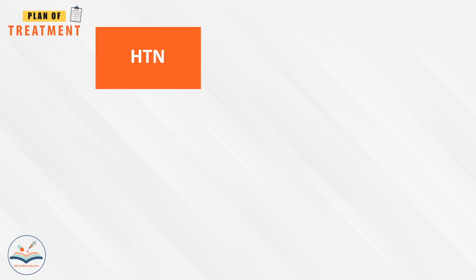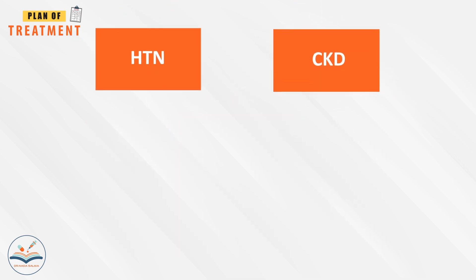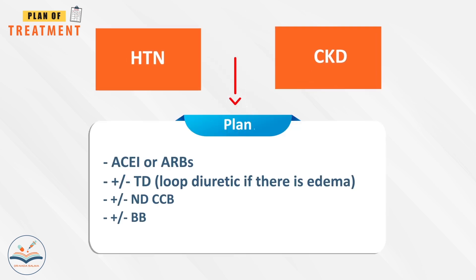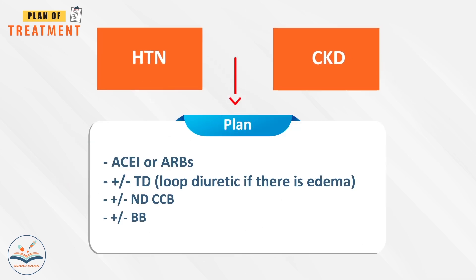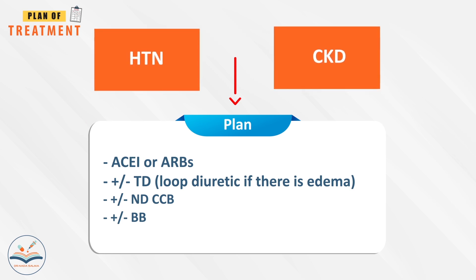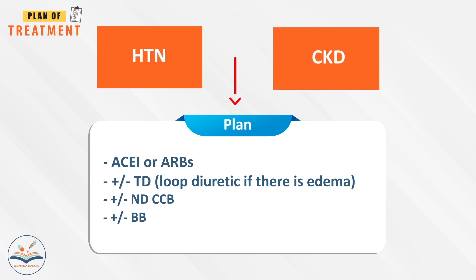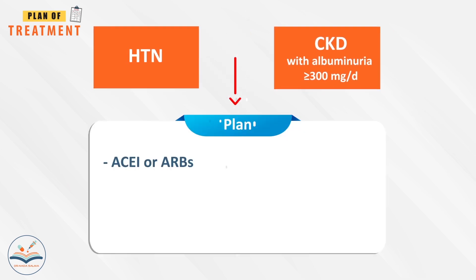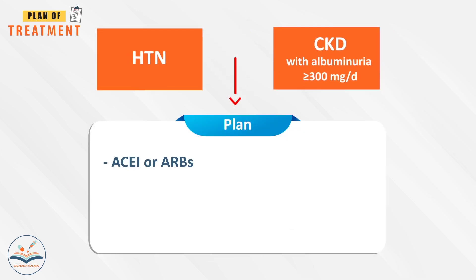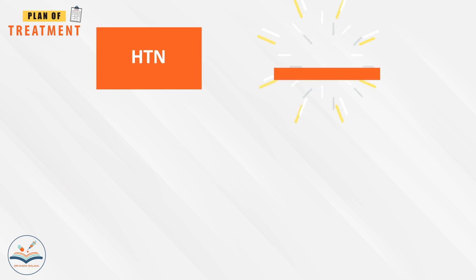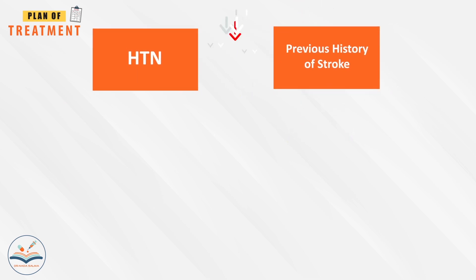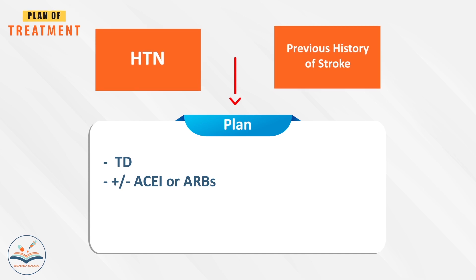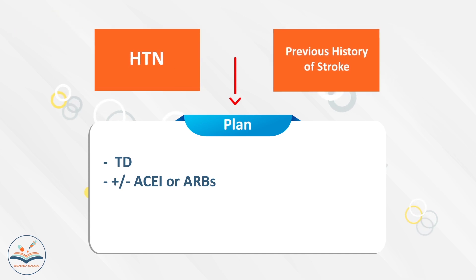In patients with hypertension plus chronic kidney disease, treat with ACE inhibitors or ARBs, plus or minus thiazide diuretics, loop diuretics if there is edema, plus or minus non-dihydropyridine calcium channel blockers, plus or minus beta blockers. In patients with CKD with albuminuria, treat with ACE inhibitors or ARBs. In patients with hypertension plus previous stroke, treat with thiazide diuretics plus or minus ACE inhibitors or ARBs.